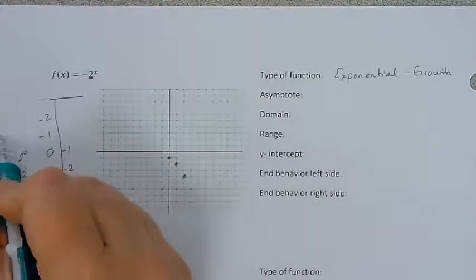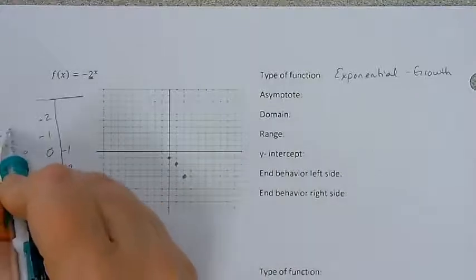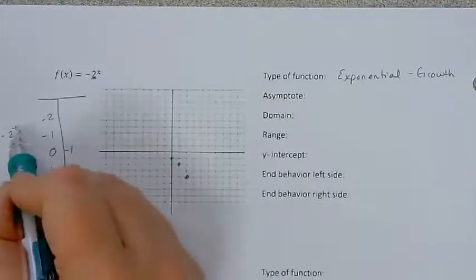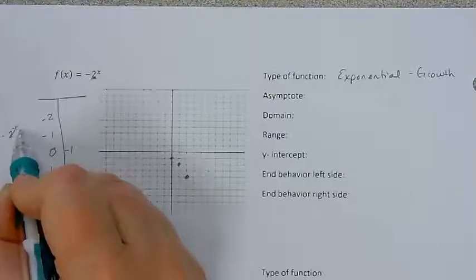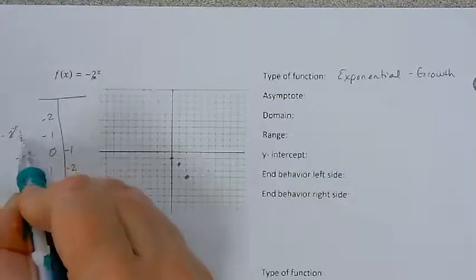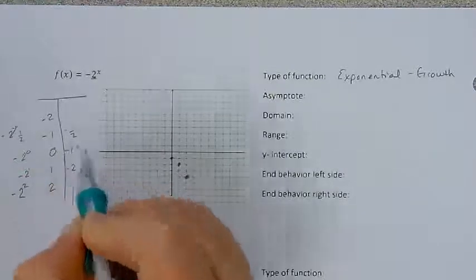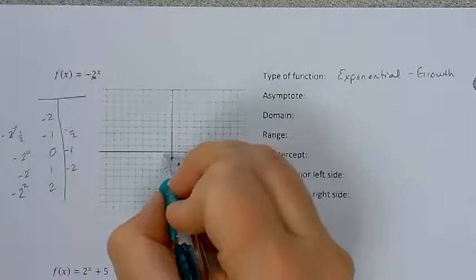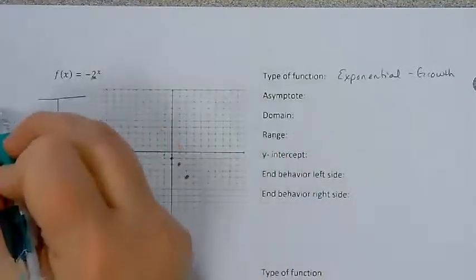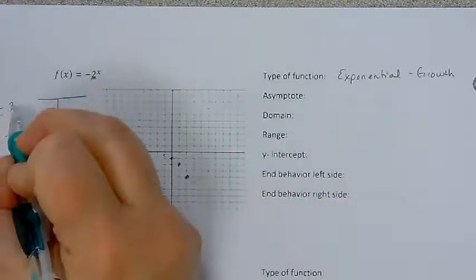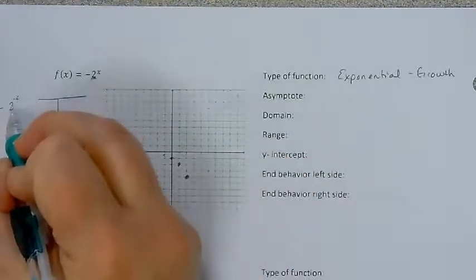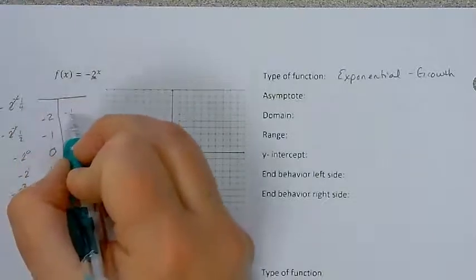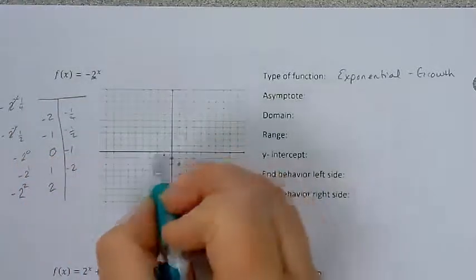On the other side, when I have negative 2 to the negative 1 power, that would be negative one-half. And then negative 2 to the negative 2 power — this is one-fourth, so it would be negative one-fourth.